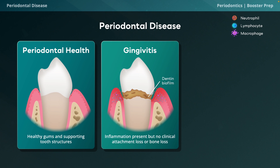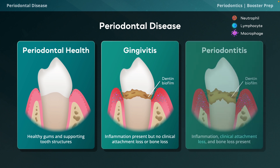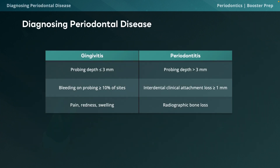If plaque is not adequately removed through thorough oral hygiene, the inflammatory response is upregulated by the immune system. Gingivitis may progress to periodontitis if the inflammation/infection spreads into the supporting structures including bone and connective tissue. The third state, periodontitis, involves inflammation, measurable clinical attachment loss, and underlying bone destruction, which can result in tooth loss.